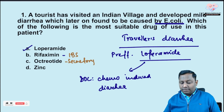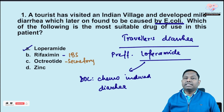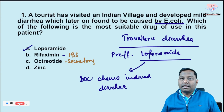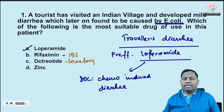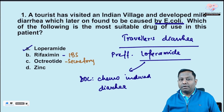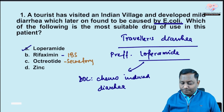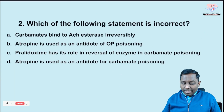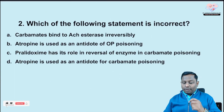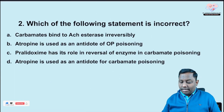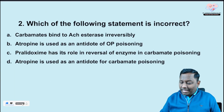For secretory diarrhea, we can use octreotide, which has many other functions as well. Zinc is a supplement that can be utilized in diarrhea, especially in the pediatric population. That was our first question.